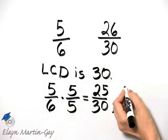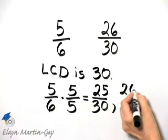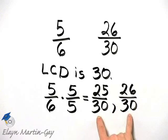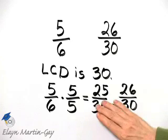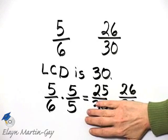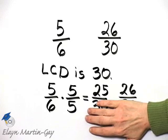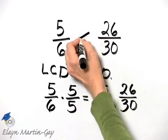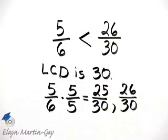And then what am I comparing it to? 26 over 30. Once the denominators are the same, I can then just compare numerators. So how do 25 and 26 compare? Well, 25 is less than 26, so this fraction is less than this fraction.